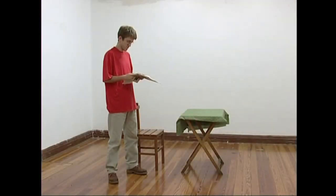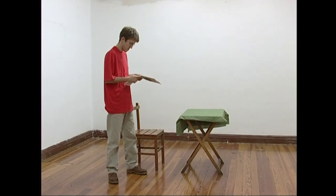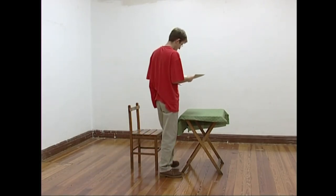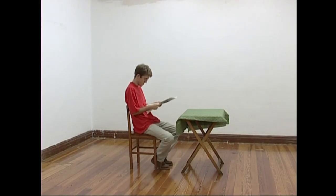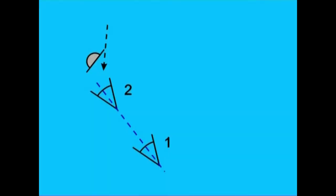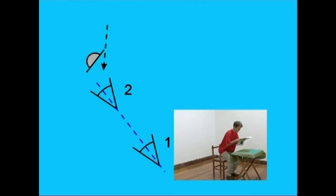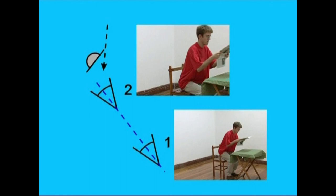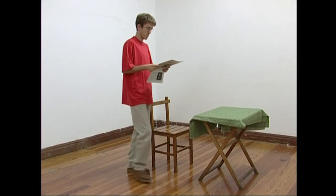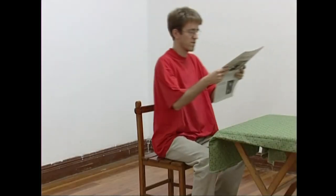Aktoreak kameraren bi kokagunetatik eseritzen edo burua makurtzen filmatu nahi ditugunean, aktoreen mugimendua bi planoetan norabide berean arda dezakegu, baina baita kontrako norabideetan ere. Kameraren kokagunetak ikusmenezko ardatz berean ezartzen baditugu, aktorearen mugimendua norabide berean ikusiko dugu bi kokagunetatik artutako planoetan. Lehenengo kokagunetik plano orokor bat hartuko dugu, aktorea eseritzen dela ikusteko. Bigarren kokagunetik berriro filmatuko dugu aktorearen mugimendu osoa. Muntatzerakoan, mugimenduaren lehen zatia lehenengo planoan erakutsiko dugu, eta bigarrenean mugimenduaren bukaera.